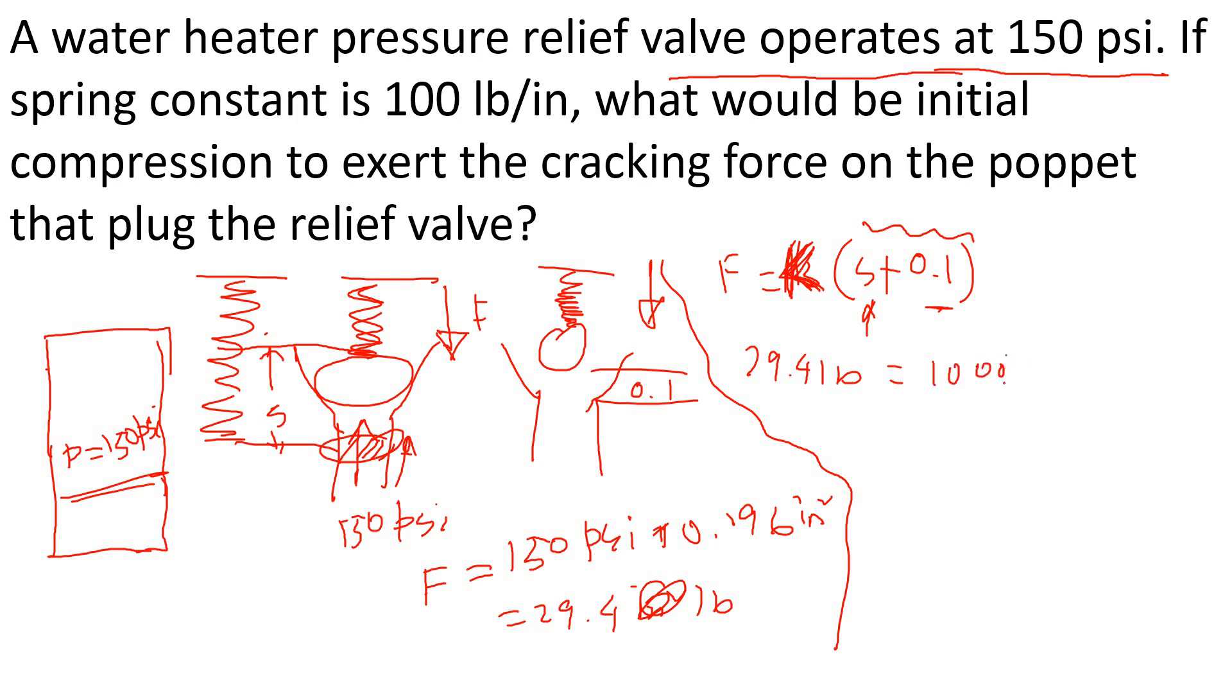Now we can solve this thing. 29.4 pounds equals 100, the spring constant, pound per inch, times S plus 0.1. If you solve for S plus 0.1, that will be 0.294 inches. Then the initial compression will be 0.194 inches.